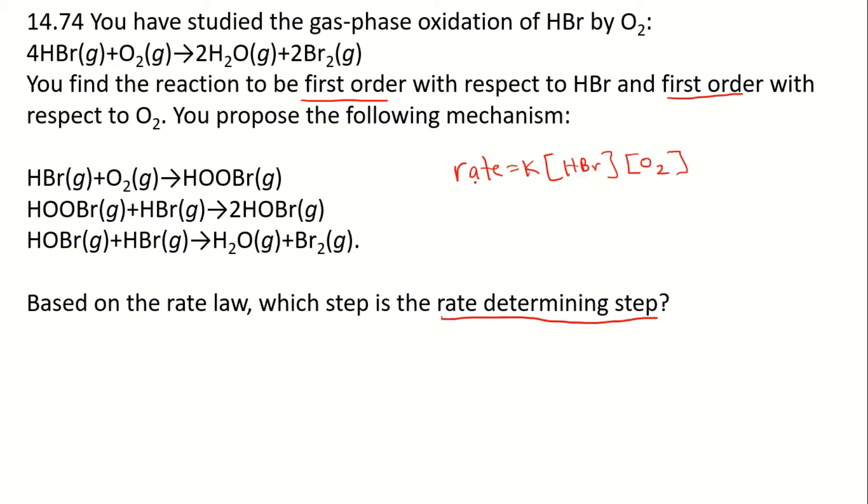When we calculate the rate of the reaction, the only two chemicals that show up in the rate law are HBr and oxygen. The rate-determining step is the step where the rate law comes from. The rate-determining step needs to have these two chemicals present in that reaction.